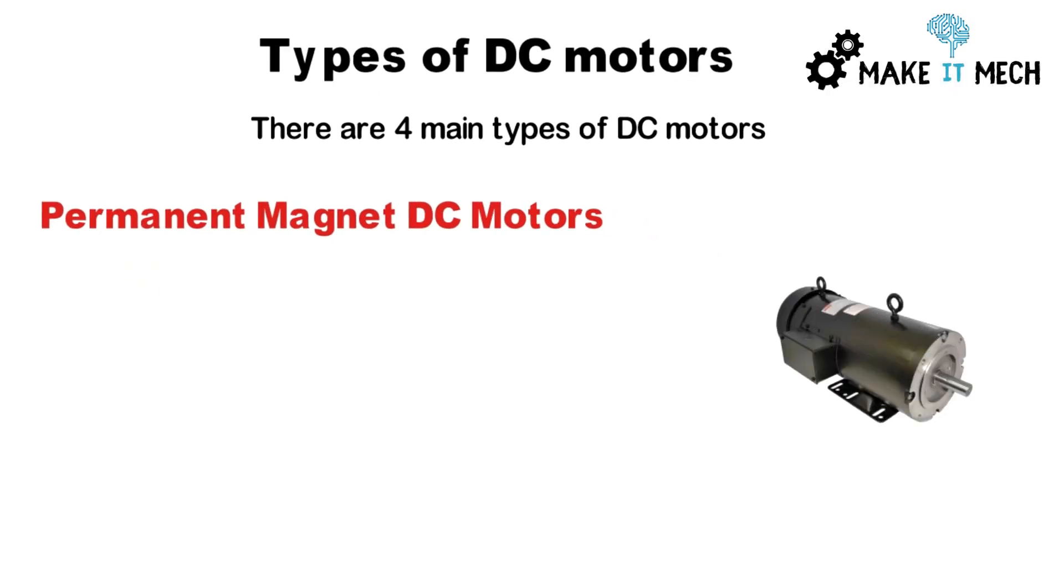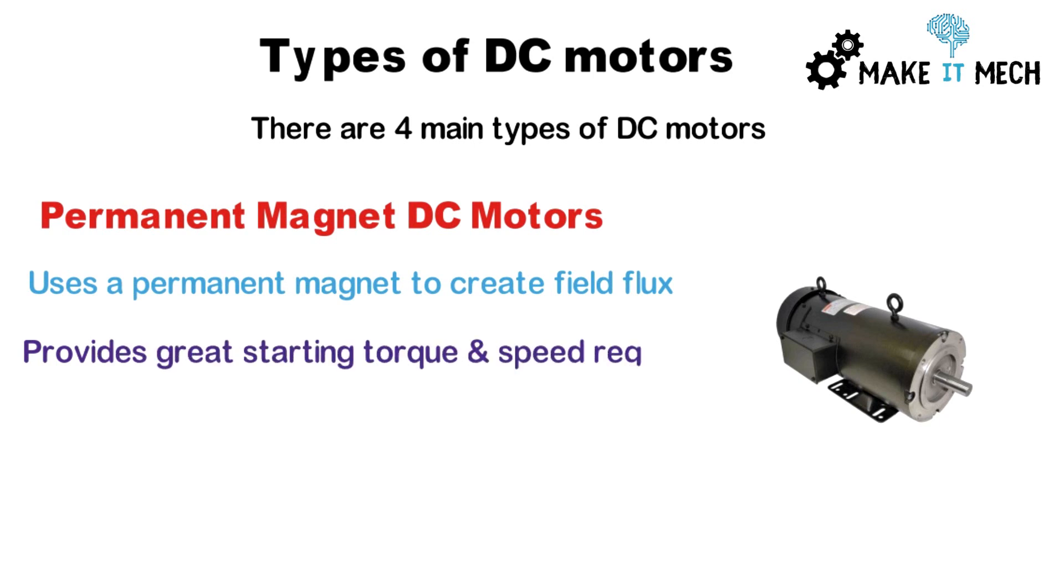Permanent magnet DC motors use a permanent magnet to create their field flux. These DC motors provide great starting torque and are typically found in low horsepower running applications.